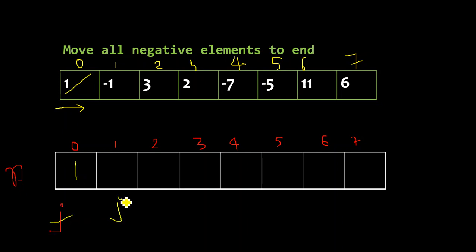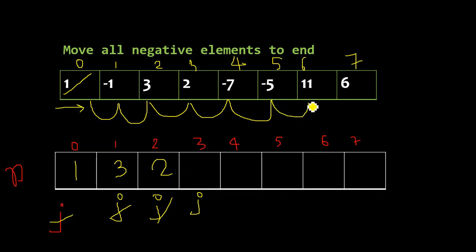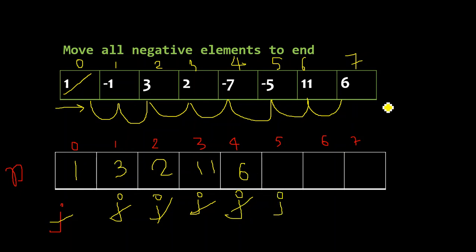Now j points to the next position. Next is -1, so we don't select it. Then 3 - yes it is positive, select this and update j. Now 2 - yes it is positive, update j to index three. Now -7 - it is not a positive number so we ignore it, j is not updated. Now 11 - yes it's positive, store this and update j. Then 6 is positive, update j. We have now stored all the positive numbers.